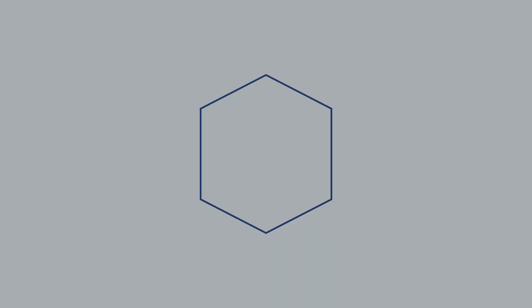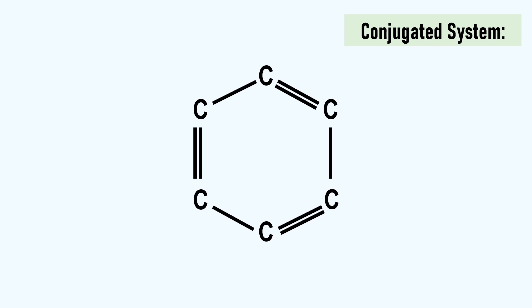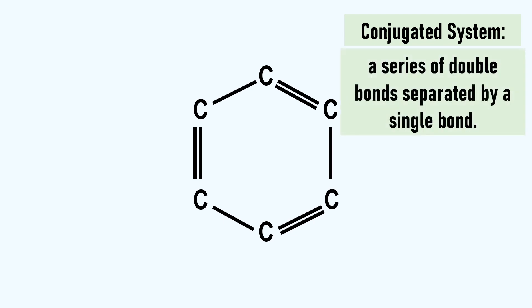One of the most common bonding patterns in chemistry and nature is the six-carbon ring. Sometimes these rings can exist as a conjugated system. This means a series of double bonds separated by a single bond.